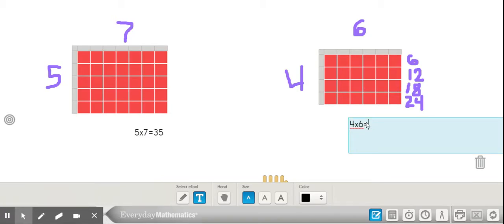As I switch over to my text box, I'm going to write the product of 24. Again, the answer to a multiplication equation is called a product, and so 4 times 6 is 24.